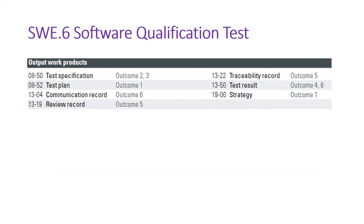Coming to the output work products: test specification, software qualification test specification, software qualification test plan, communication records, reviewer records, traceability record, test results of software qualification test, and software qualification test strategy. The reviewer records apply to the test strategy, test specification, and test plan. Communication records are also applicable to all of these — communication records include email evidence, auto-generated emails from configuration management tools, minutes of meeting, or status reports.